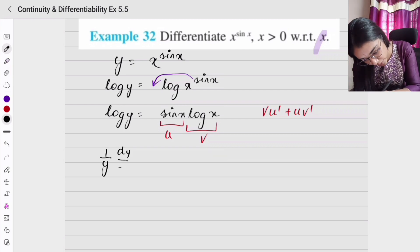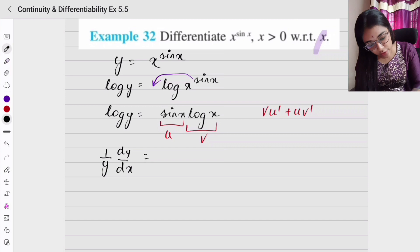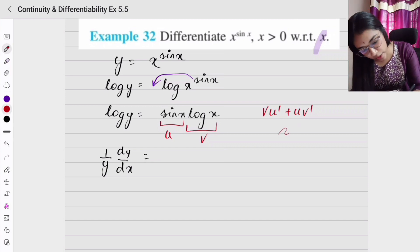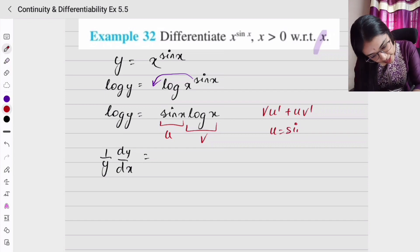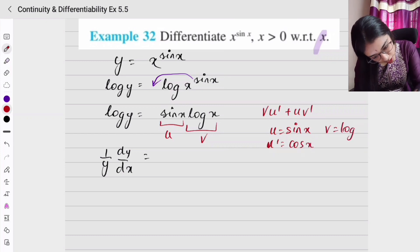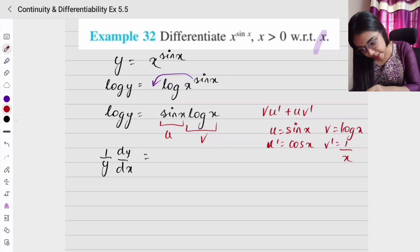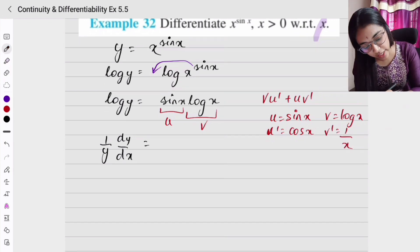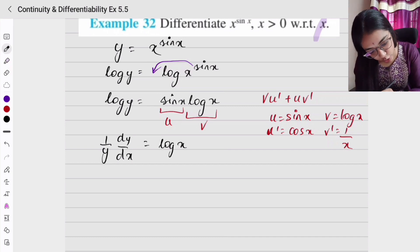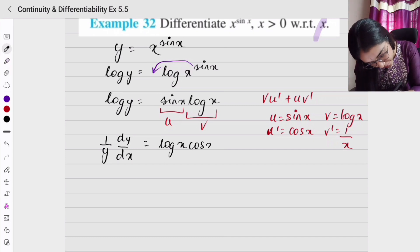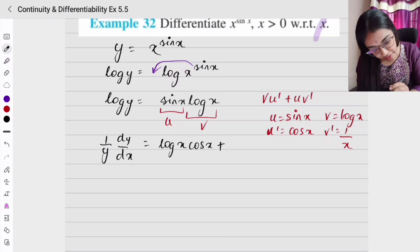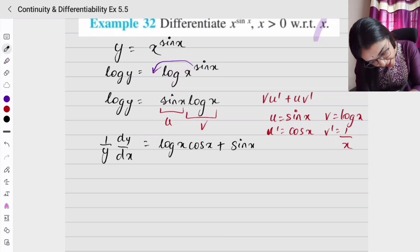Differentiating both sides: (1/y)(dy/dx) = v·u' + u·v'. Here u = sin x, so u' = cos x; and v = log x, so v' = 1/x. Substituting: v·u' = log x times cos x, and u·v' = sin x times 1/x.